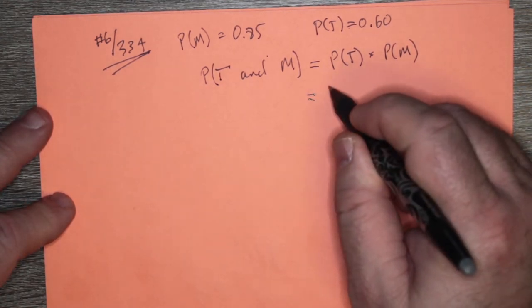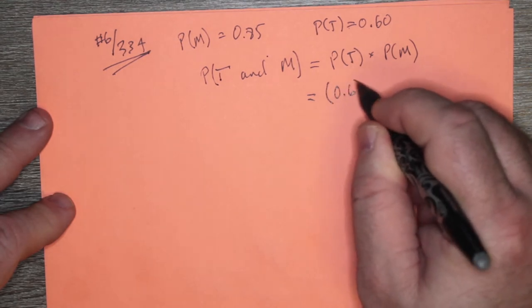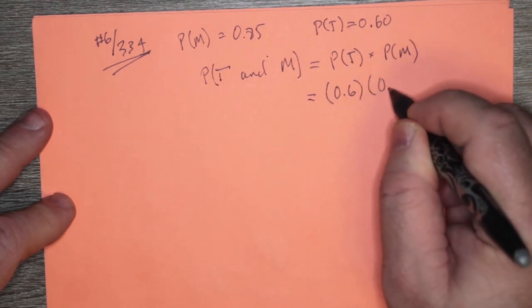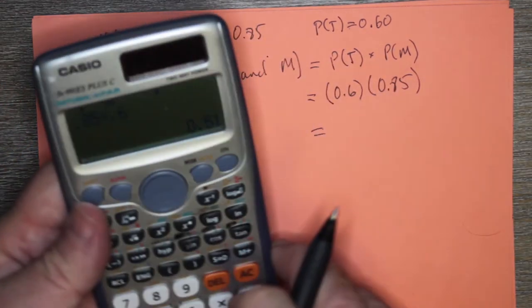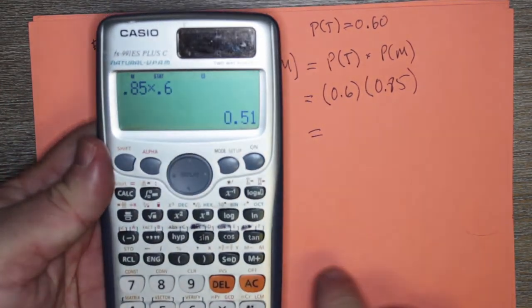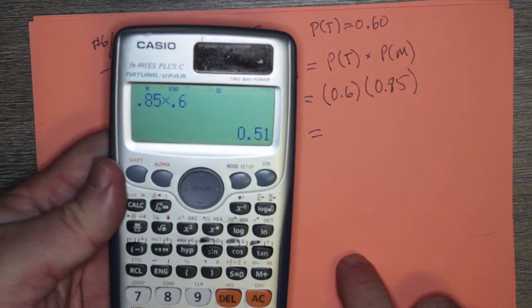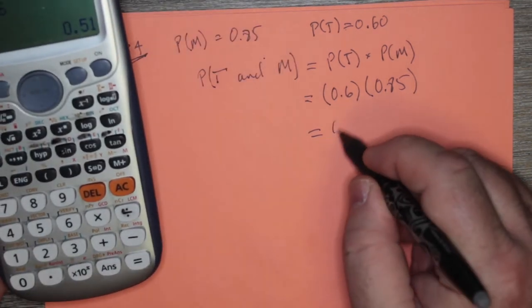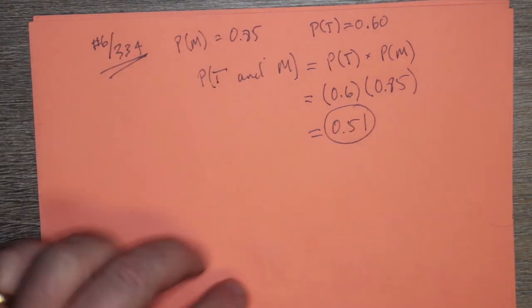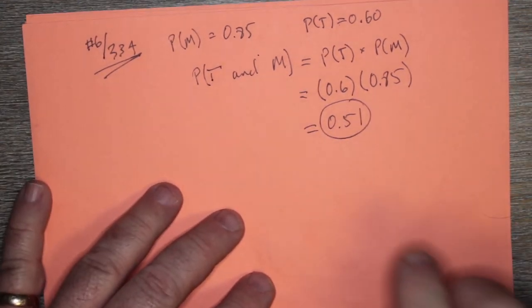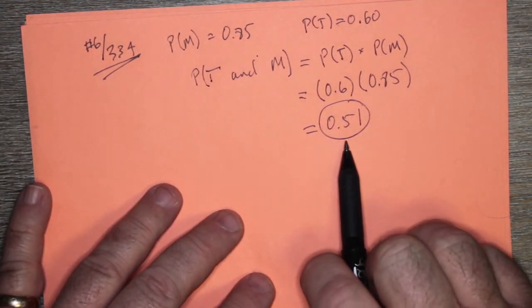So we're going to say 0.6 times 0.85 and this will be equal to, I already worked it out, 0.51. And so there's a 51% chance that they will be seen at the dance together.